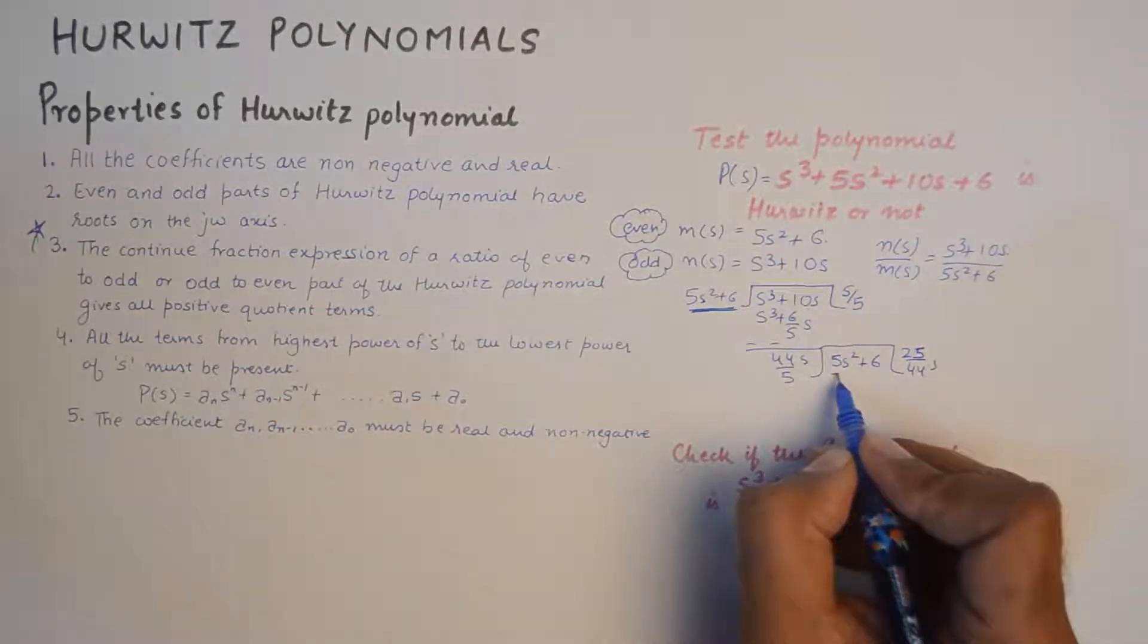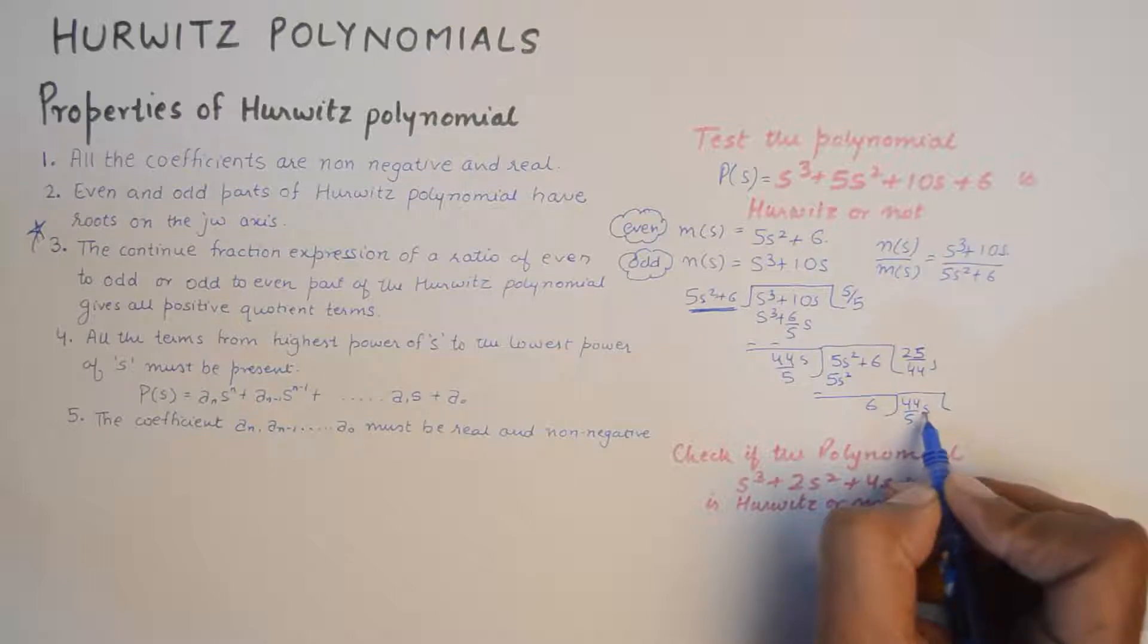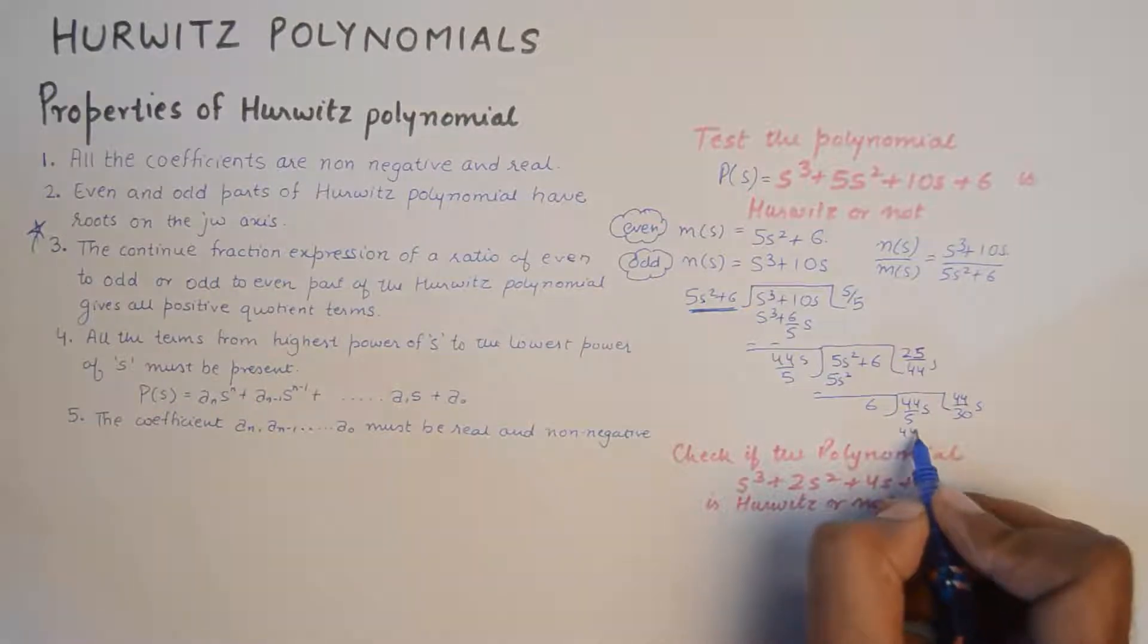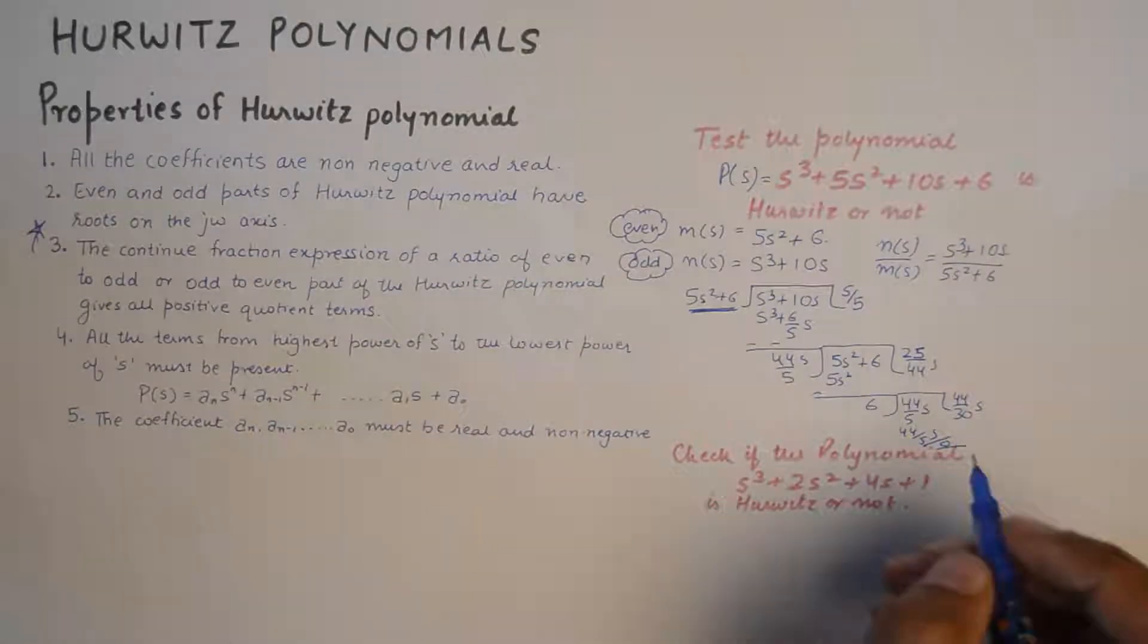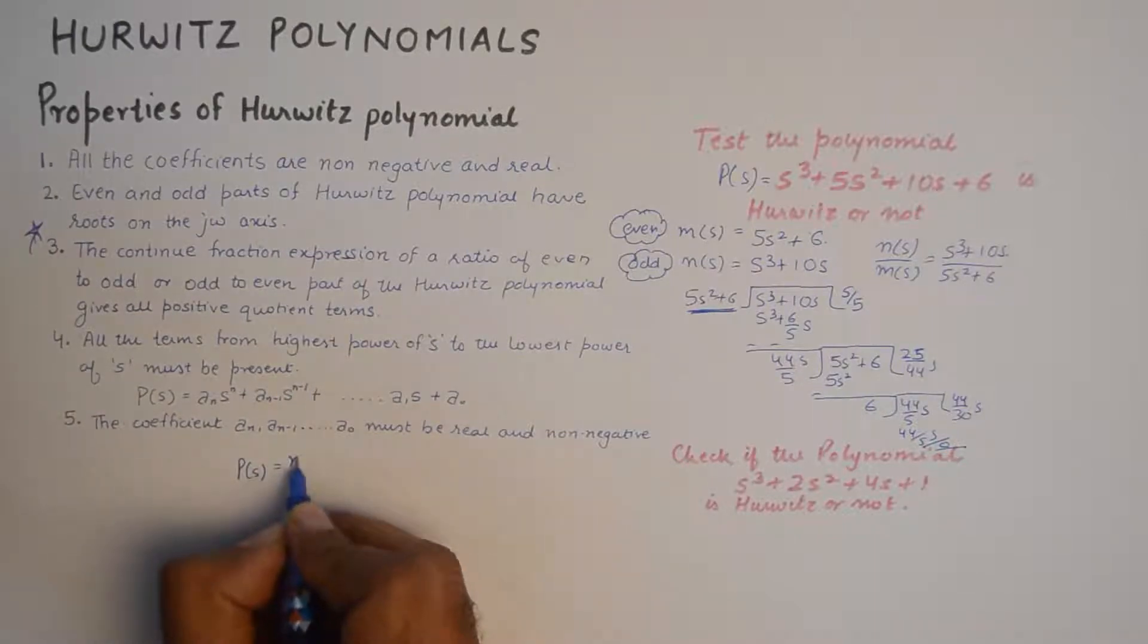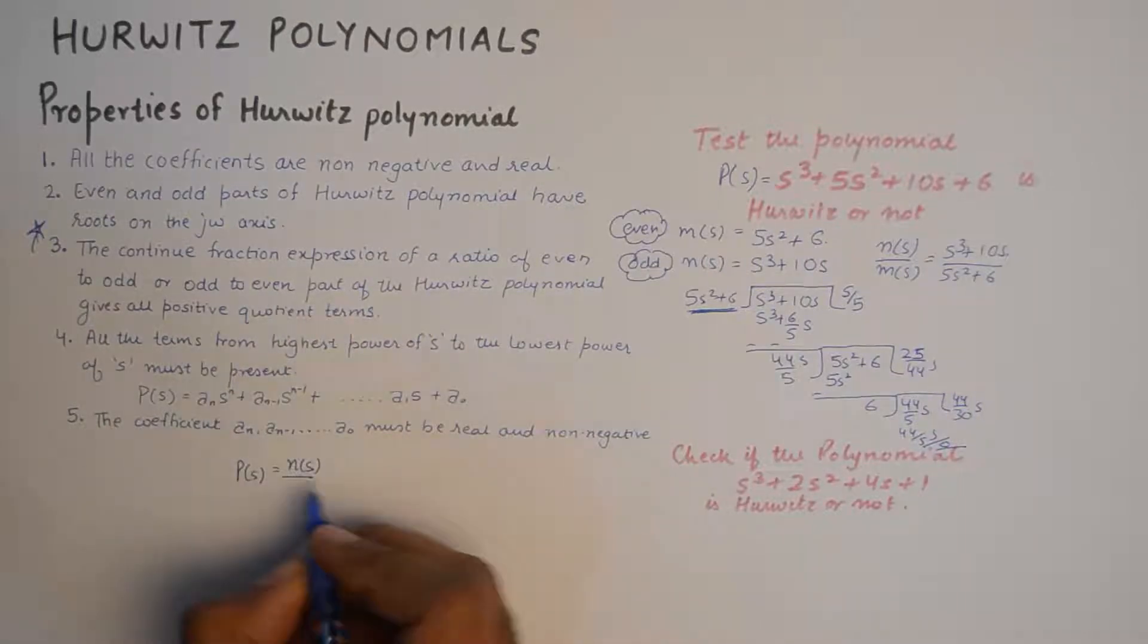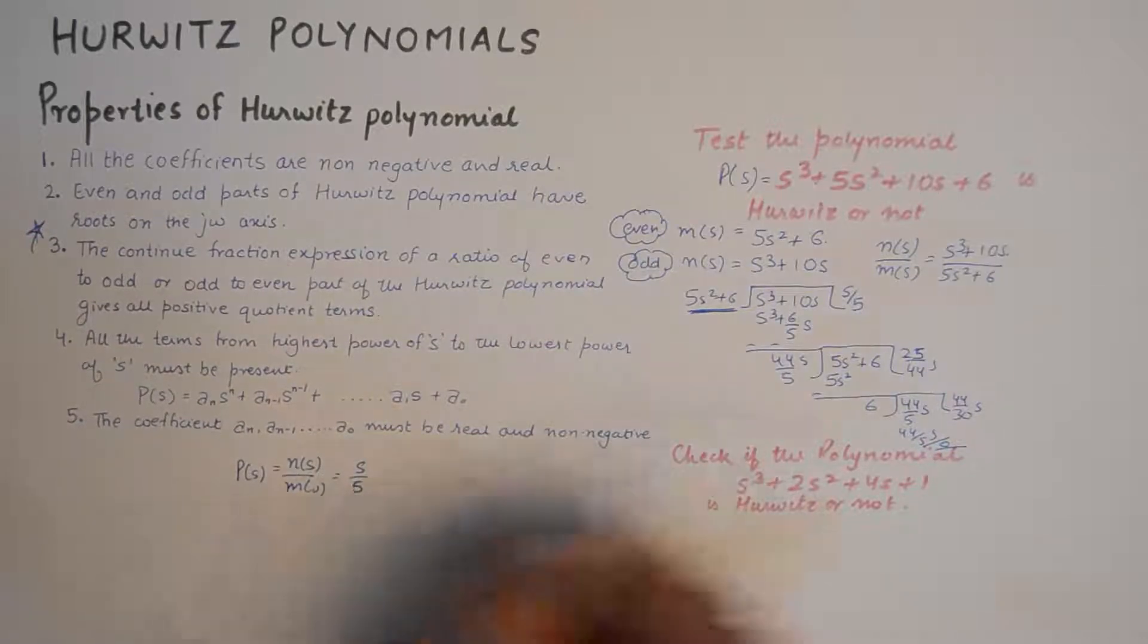So this is how the continued fraction is obtained. To get rid of this, I simply say I get a 6 here, and then I divide this. So I get a 0 here. Now what you need to do is, if you express P(s) as the ratio of odd to even parts, in this case it becomes s by 5, which is the first quotient.